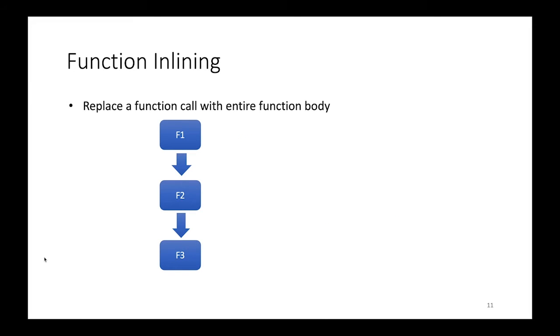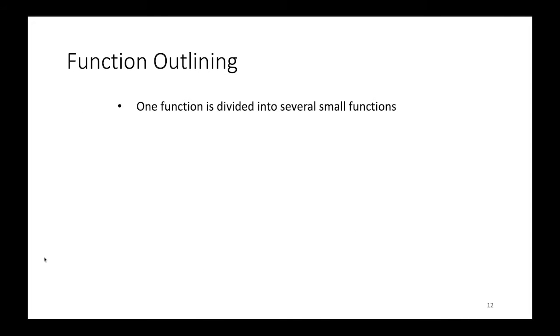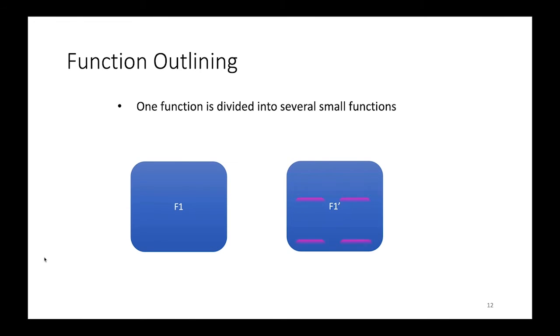Function inlining simply mean that you combine functions. For example, we may have f1 that call f2 and f3. In the inlining, f1 may only call a new function that combine both f2 and f3 together. Function outlining is the idea of taking one function and dividing it to a bunch of small functions. So graphically, you might have f1. And then f1 prime would have a few more functions inside of it. Fundamentally, it will do the same thing, except that you have to make several function calls in order to accomplish the same task as what f1 would have done.